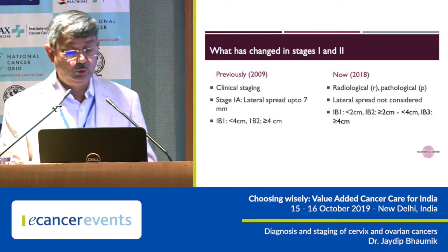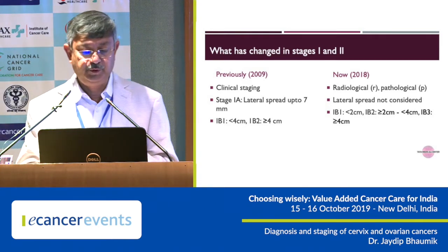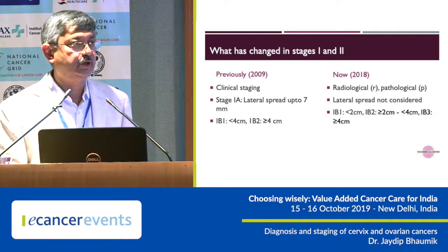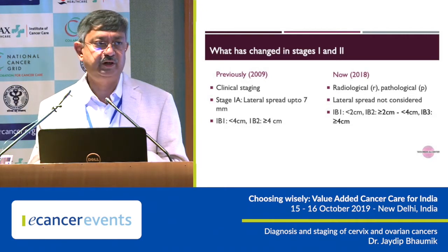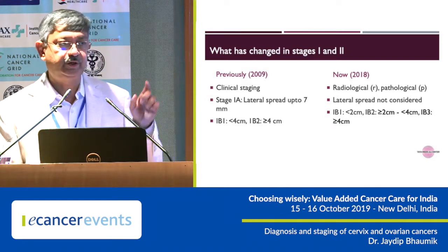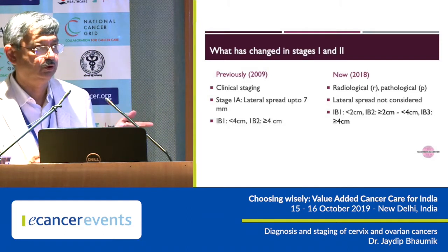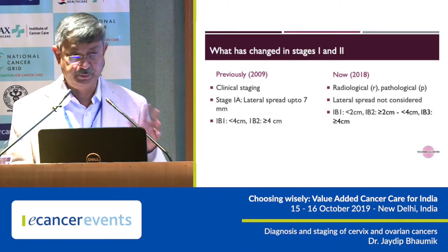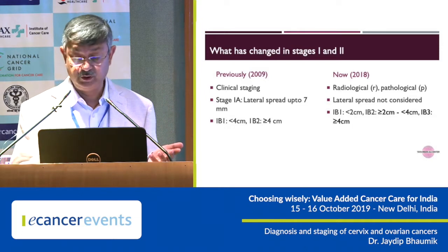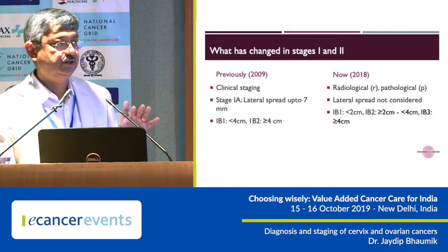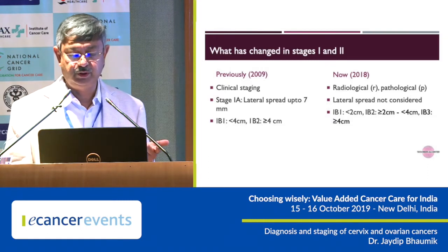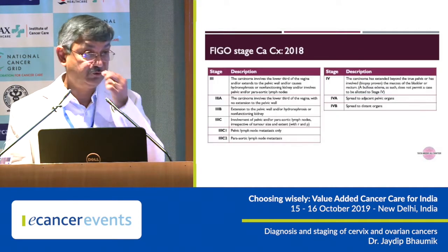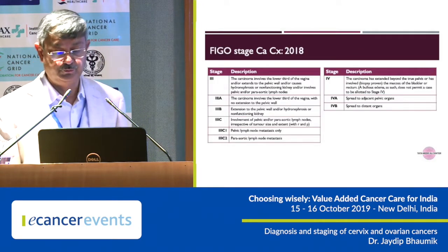In 1B1, previously it was 1B1 and 1B2 — less than 4 cm and more than 4 cm. Now we know through various studies that the size of 2 cm is actually more important compared to 4 cm for treatment outcomes and modality of treatment. So it has been subclassified into B1, B2, and B3: less than 2 cm is 1B1, between 2 and 4 cm is 1B2, and more than 4 cm is 1B3.